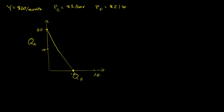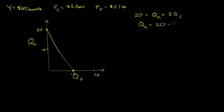The equation of this budget line is: my budget, 20, is equal to the price of chocolate, which is 1, times the quantity of chocolate, plus the price of fruit, which is 2, times the quantity of fruit. If I want to write this explicitly in terms of my quantity of chocolate — since I put that on my vertical axis — I subtract 2 times the quantity of fruit from both sides, and I get: quantity of chocolate equals 20 minus 2 times my quantity of fruit.